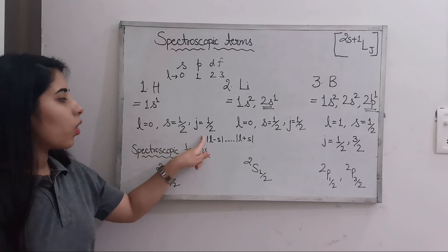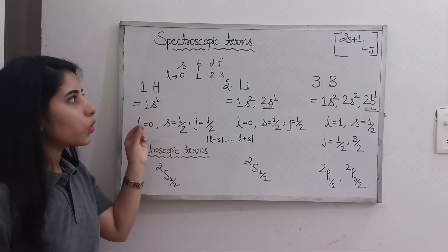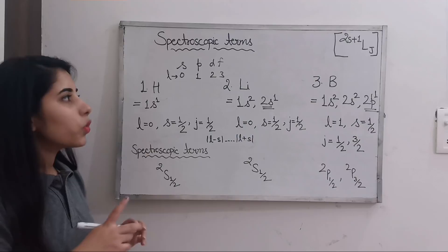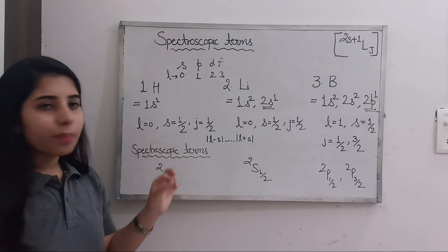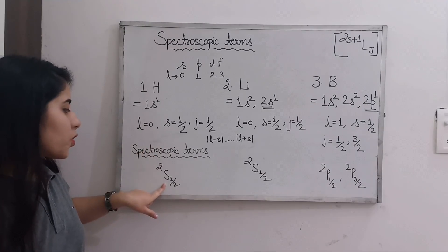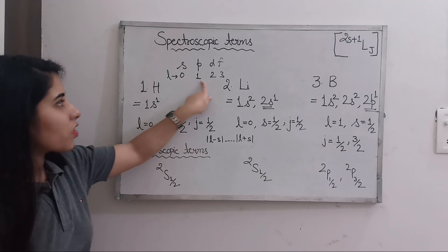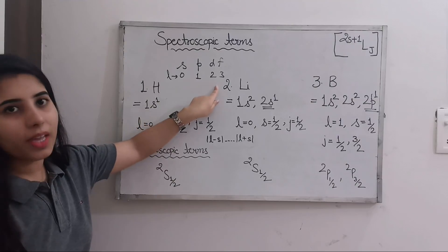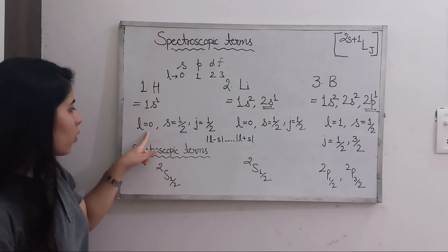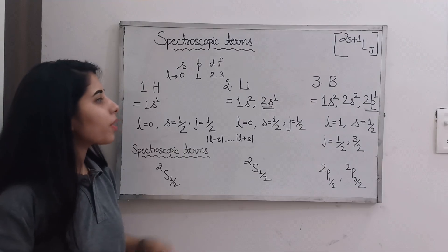Once you have all these values, write the spectroscopic term as 2S+1 L_J. Here S = 1/2, so 2 × (1/2) + 1 = 2. Since L = 0 it is denoted as S, and J = 1/2. So the spectroscopic term for hydrogen is 2S_{1/2}.